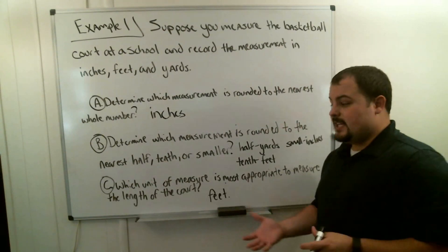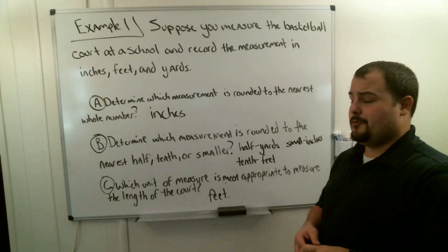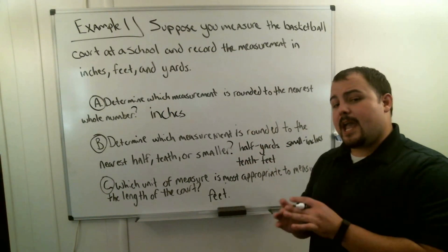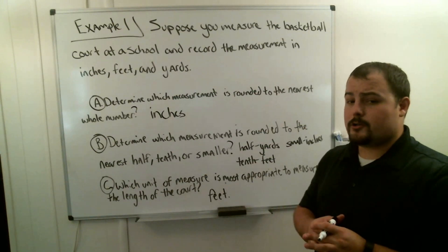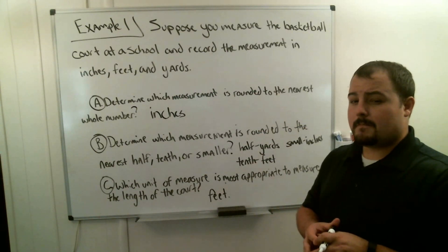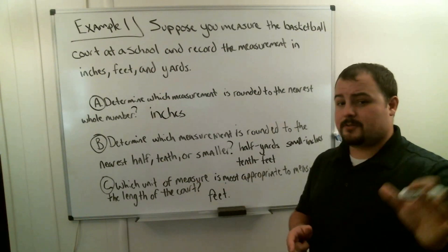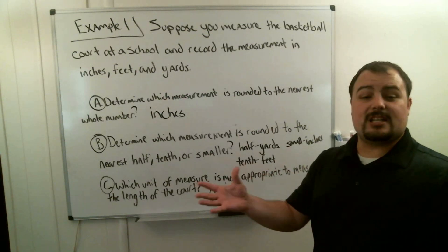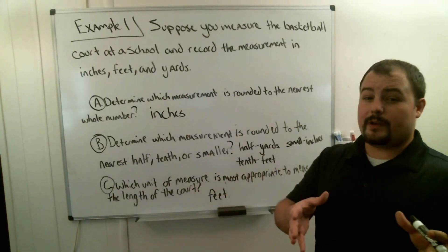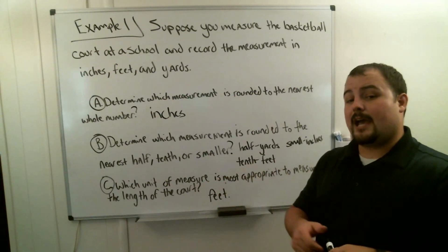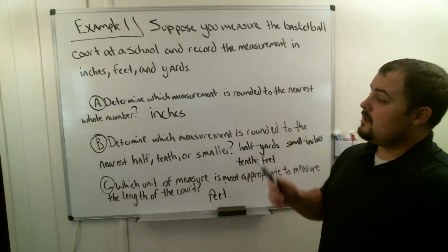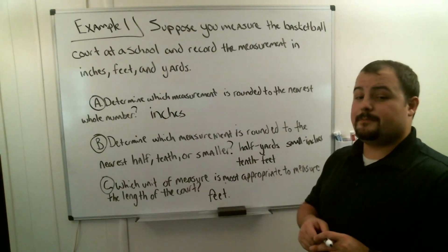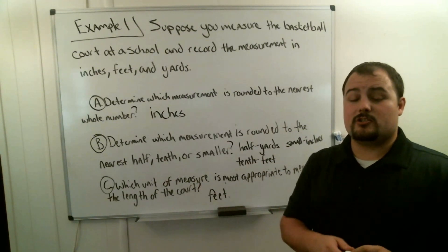There's one more question: which of these three units is the most accurate when measuring a basketball court? If you're thinking inches, you're absolutely correct. The smaller the unit of measurement, the more accurate it is. The smaller we can get, the closer we're going to get to the actual measurement. So the smallest unit of measurement is always the best solution for maximum accuracy. Let's try another example.